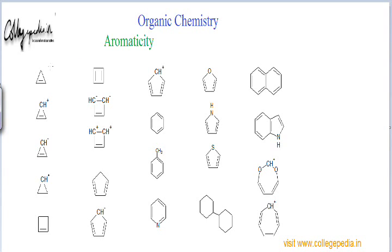If we see the hybridization of all the atoms, these two atoms which are making pi bonds are surely sp2 hybridized because they are making three sigma bonds and one pi bond. The third sigma bond with hydrogen hasn't been shown, but carbon makes four bonds, so the fourth bond is with hydrogen. If carbon is making one pi bond, the hybridization state of that carbon is sp2.